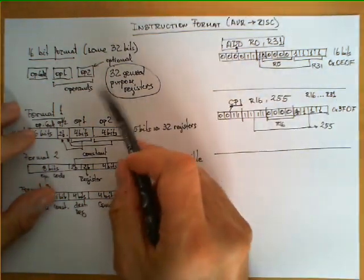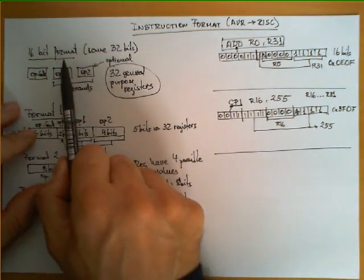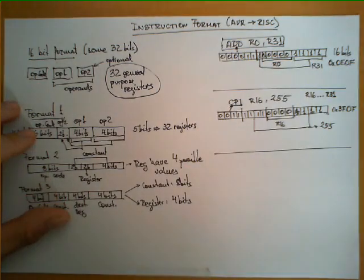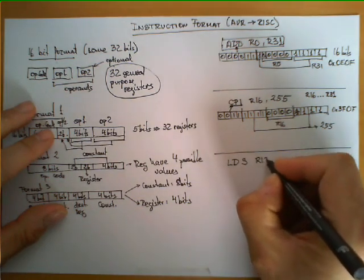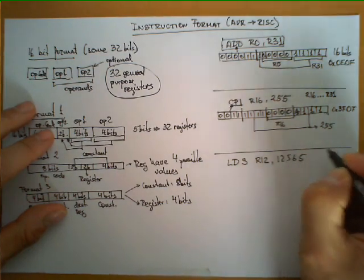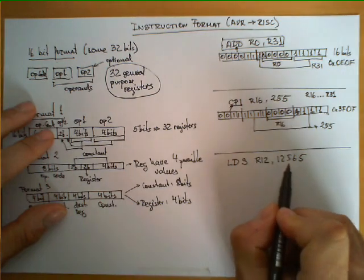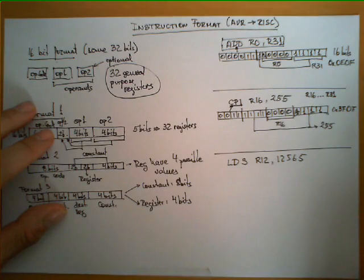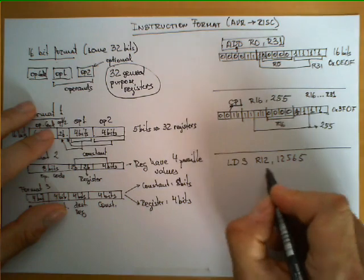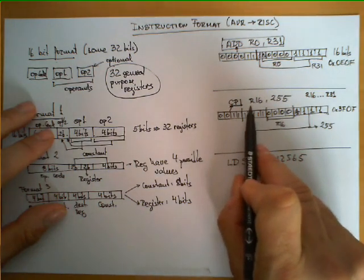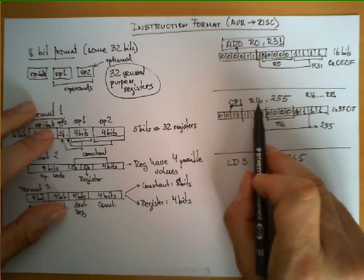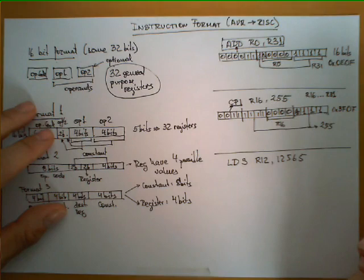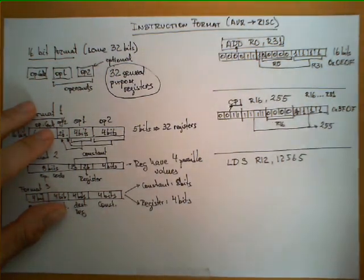Let's look at a third example — a slight exception. Some instructions in this architecture occupy 32 bits instead of 16. The instruction LDS R12, 12565 goes to memory at the specified address, gets the information stored in that cell, and loads it into register R12 — this is a data transfer instruction. The previous CPI instruction was comparing R16 with 255, internally performing the subtraction R16 minus 255. For LDS, how is this encoded?